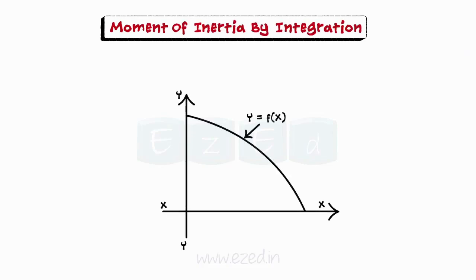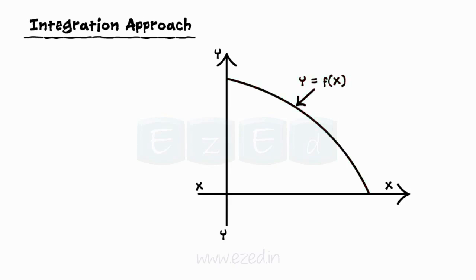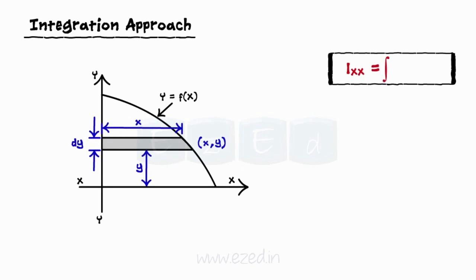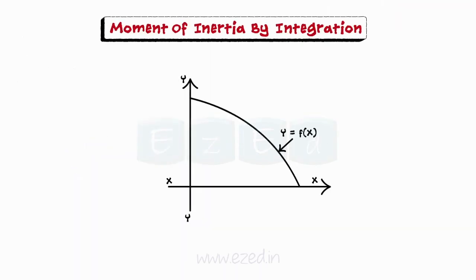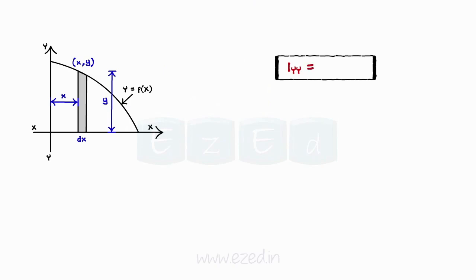Now we will learn the method to find moment of inertia using integration. To find the moment of inertia of areas bounded by curves, we use the integration approach. Consider the area bounded by the curve y = f(x). The moment of inertia about the XX axis can be found by taking an elemental strip of width dy parallel to the XX axis located at a distance y from the XX axis, then using the integration of y² · dA, where dA equals x · dy. The moment of inertia about the YY axis can be found similarly using an elemental strip of width dx, and integrating x² · dA, where dA equals y · dx.